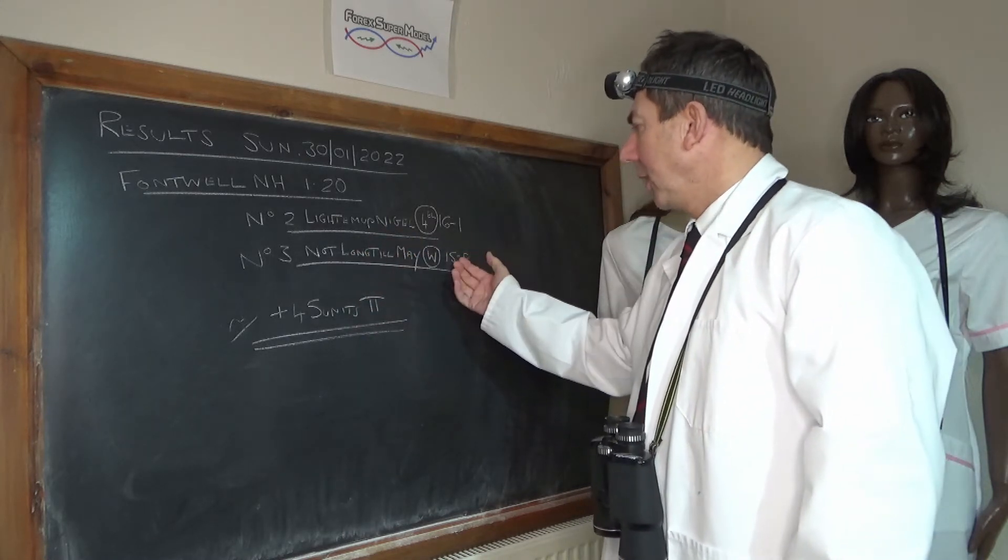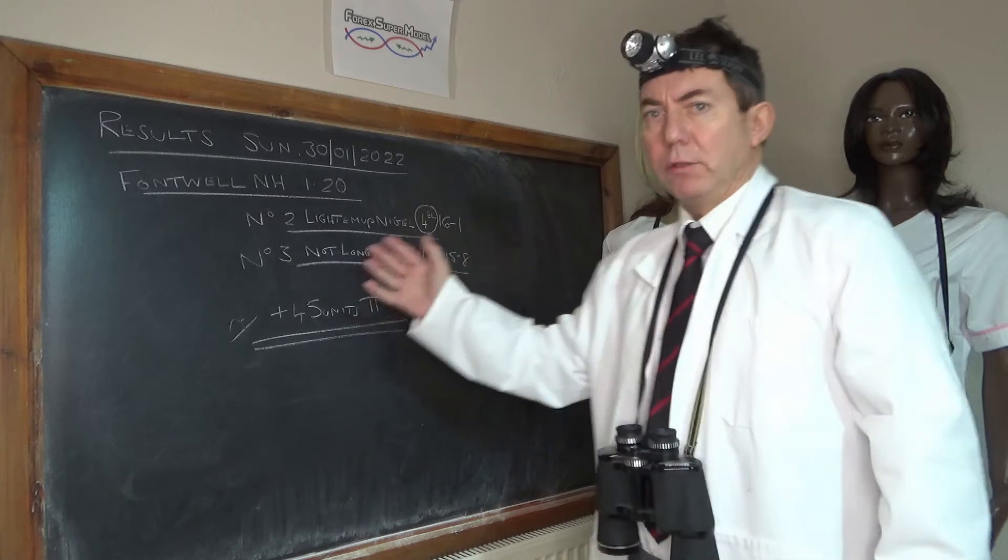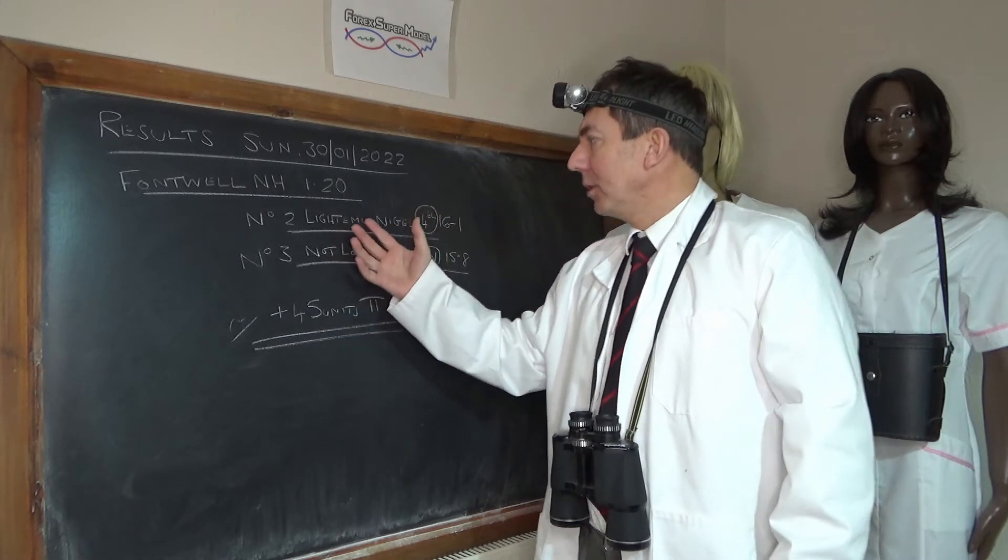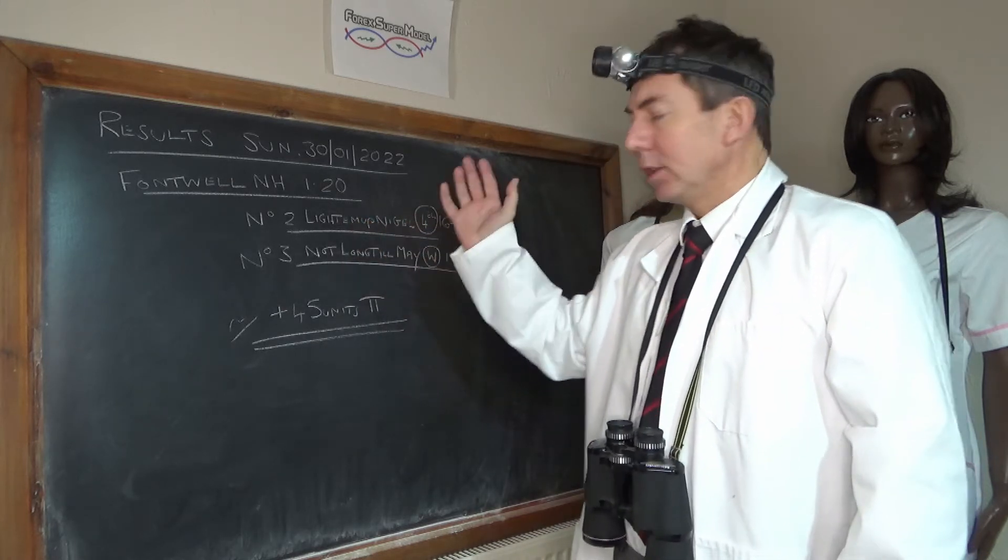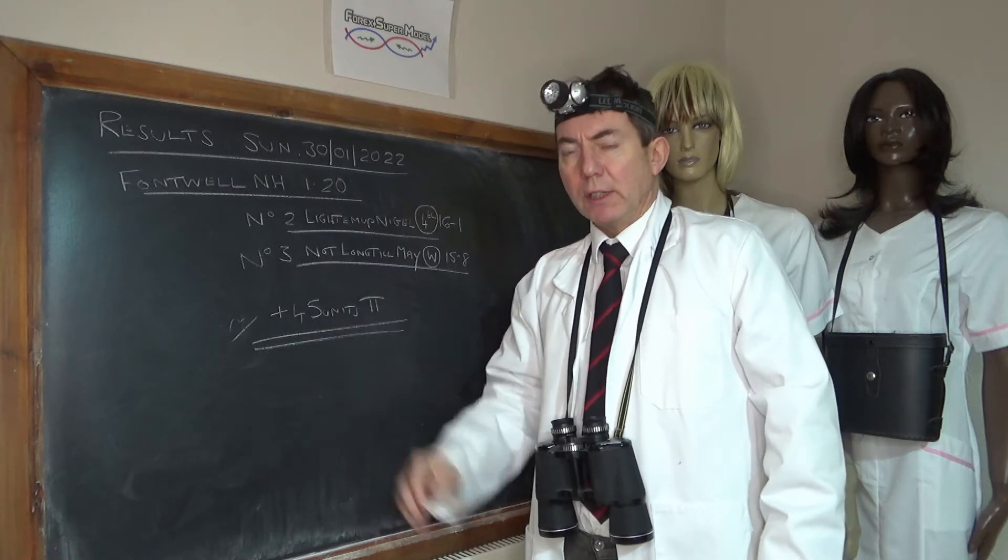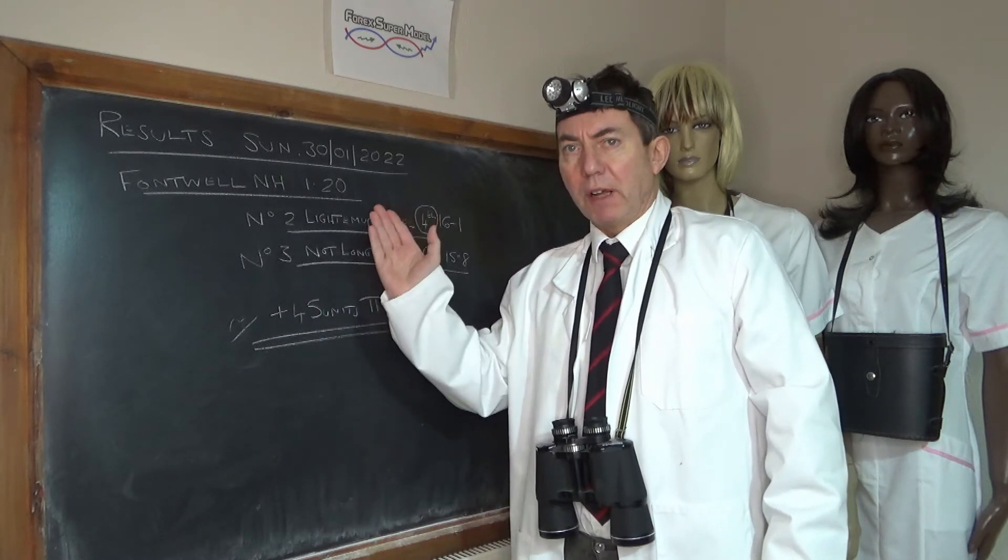We also had the eventual winner, number three Not Long Till May, which came in at the SP of 15 to 8. We got 2 to 1 and we were using that horse to lever into a potential big win on Light them up Nigel, and unfortunately that didn't happen.